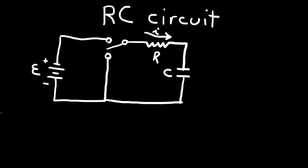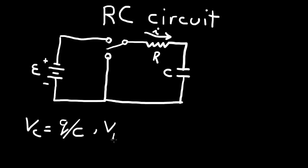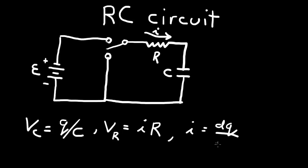The voltage across the capacitor is equal to the charge on the capacitor divided by the capacitance. The voltage across the resistor is given by Ohm's law — it is the current through the resistor times the resistance. In the circuit, the charge and the current are related: the current is equal to the derivative of the charge with respect to time, which is why we get a differential equation.